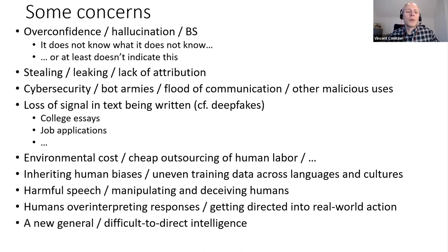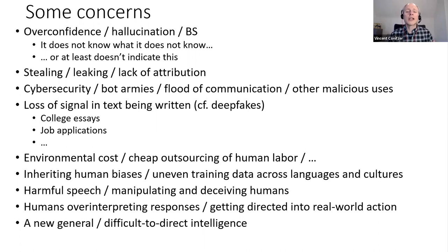And then there are the broader issues — we're really introducing a seemingly quite general intelligence into the world, and that seems potentially dangerous. There are communities of people really worried about us introducing an intelligence that is broadly more intelligent than us and might decide to displace us. These systems are getting better very quickly, so I don't think it's crazy to think about. It's also difficult to think about whether they'd really behave like agents seeking to accomplish things in the world — that doesn't seem to be what ChatGPT is set up to do, but maybe it naturally emerges, or someone deliberately designs a system that way.